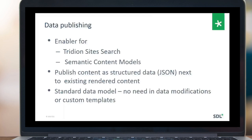There are three main points to know about data publishing. First, it's an enabler for semantic content models, which we cover today. It's also an enabler for on-site search — an out-of-the-box search on the content delivery side — which will be covered in detail in a separate webinar. Data publishing is all about publishing content as structured data in JSON format alongside existing rendered content, using a standard data model so you don't need any data modifications or custom templates.